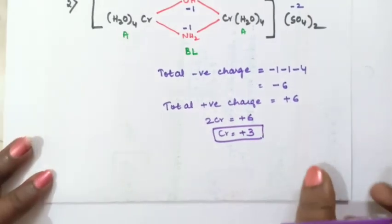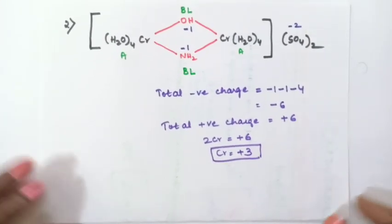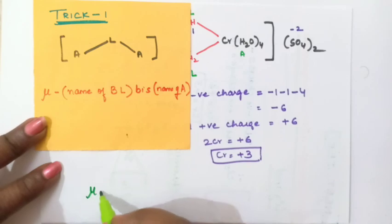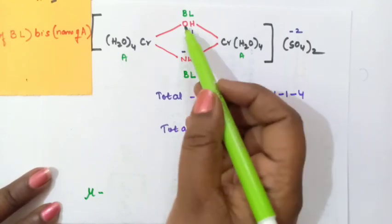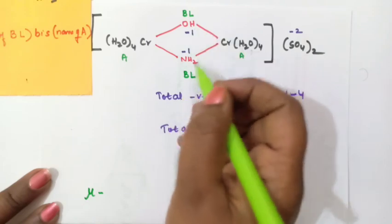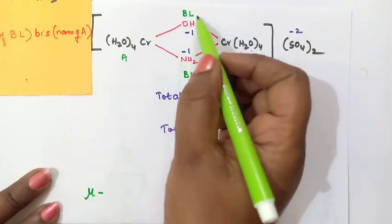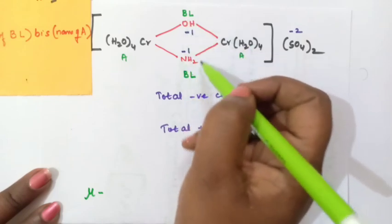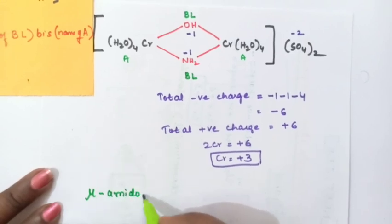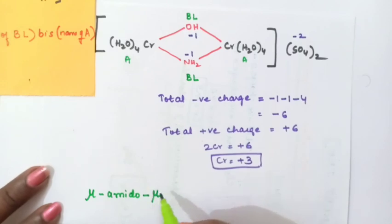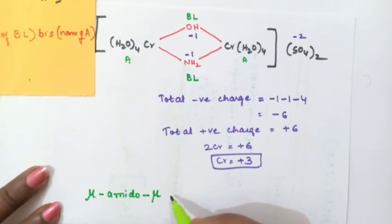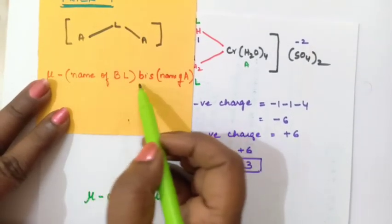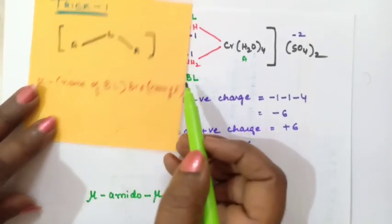Now let us write the name of this compound using the trick. First write mu-dash, then the name of the bridging ligand. We have 2 bridging ligands here: hydroxido (starts with H) and amido (starts with A). Write them in alphabetical order — amido comes first. So write: μ-amido, then another μ-hydroxido. After the bridging ligands, write bis.